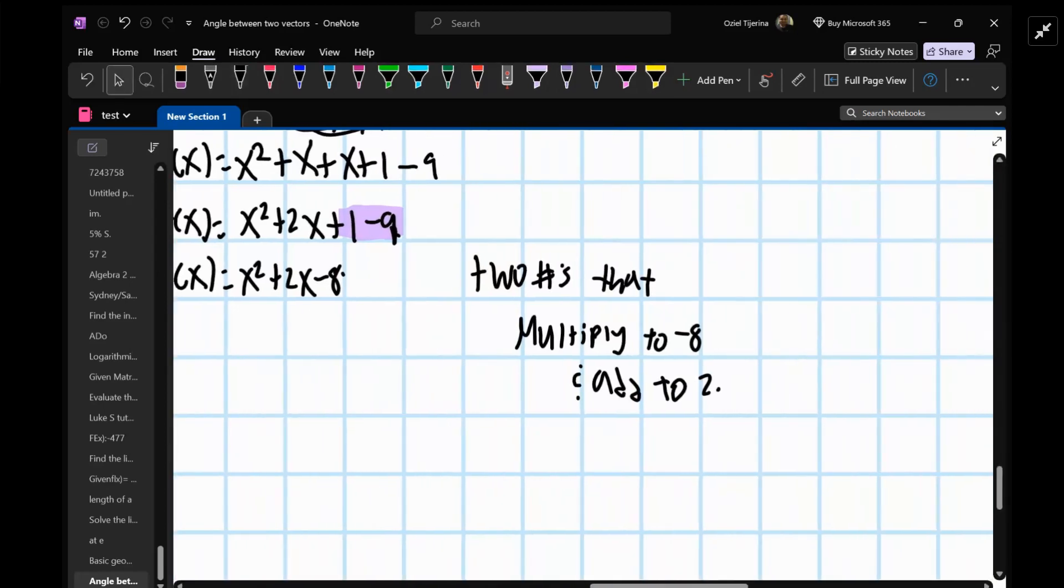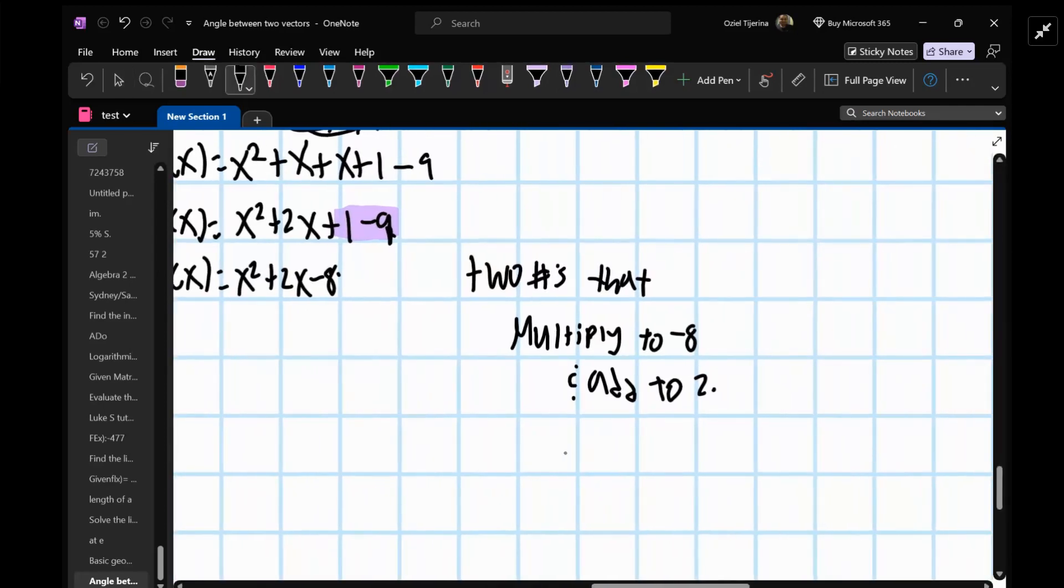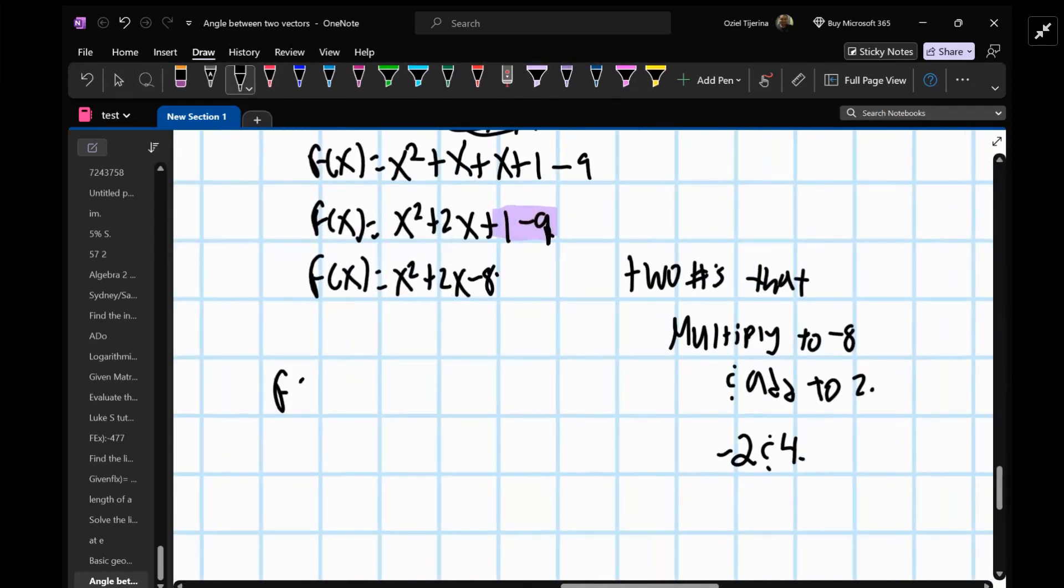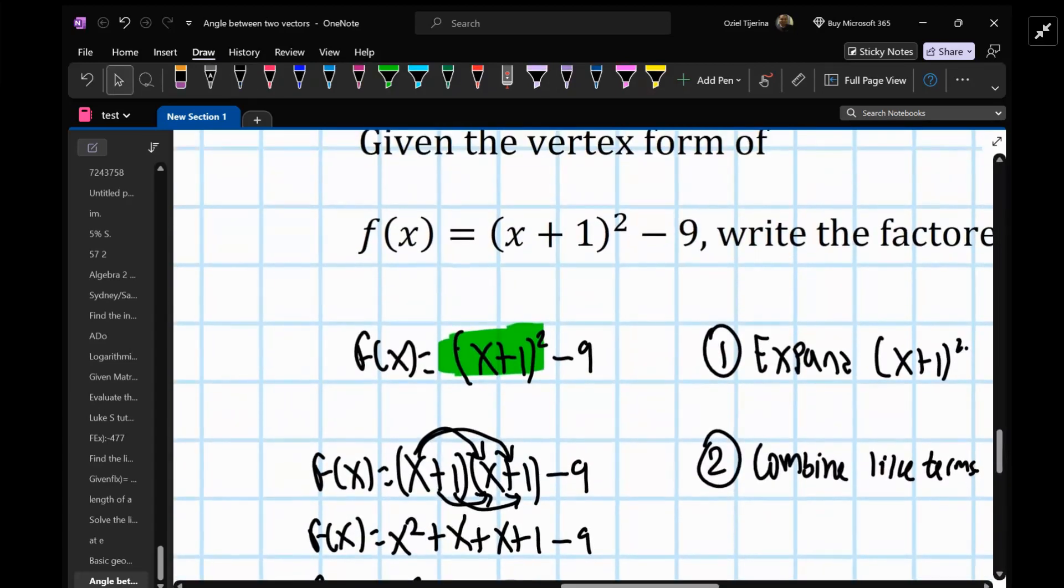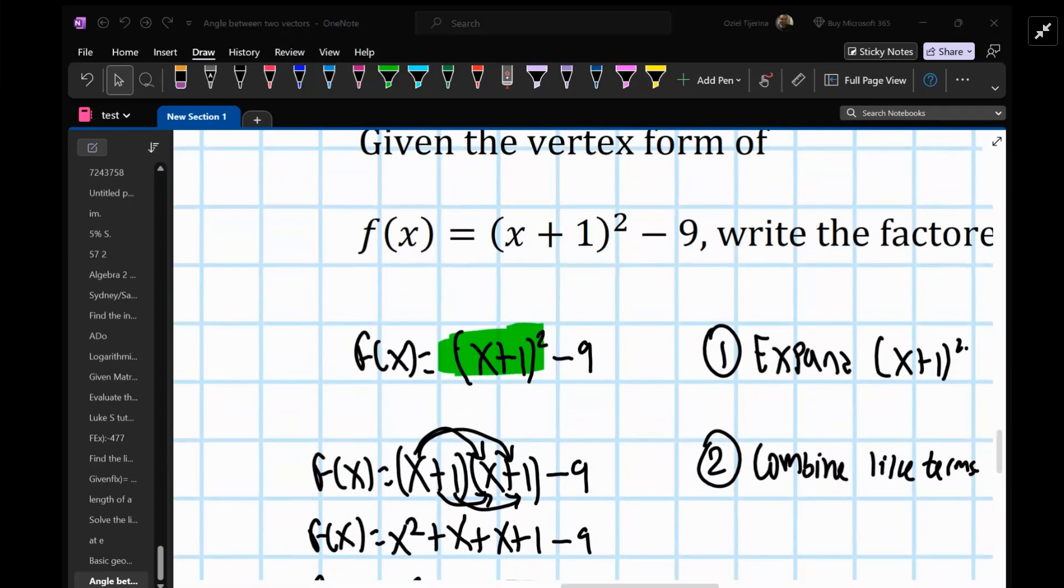And we can clearly see that the two numbers that do that are negative 2 and 4. Therefore, f(x), and you're just going to follow the sign, so it'll be (x - 2)(x + 4). And this would be the factored form of f(x) equals, or I'm sorry, (x + 1)² - 9.